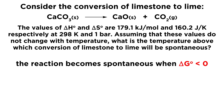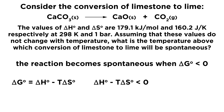The first thing we have to remember is that reactions are spontaneous when delta G is less than zero. We need delta G to be negative for a reaction to be spontaneous. So if delta G equals delta H minus T delta S, and we need delta G to be less than zero, then we also need delta H minus T delta S to be less than zero, because those are equivalent.